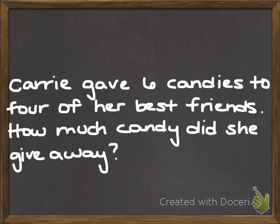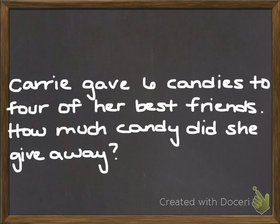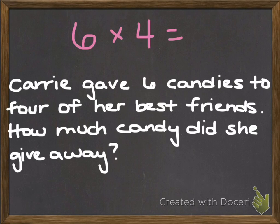Here we have a problem today. Carrie gave six candies to four of her best friends. How much candy did she give away? Well, Carrie's really nice, isn't she? She gave six candies to four of her best friends. So, I can write an equation: she gave six candies to four groups of friends, and I'm trying to figure out how many candies she gave away. Six times four equals the total amount she gave away.